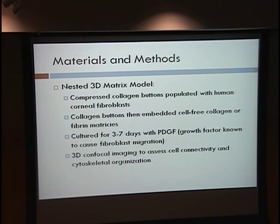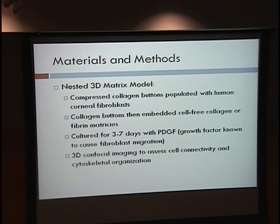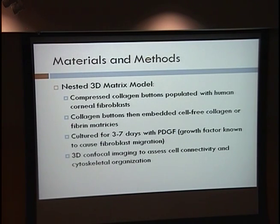The model we developed is called a nested 3D matrix model. I took compressed collagen discs populated with human corneal fibroblasts and embedded them in a cell-free collagen or fibrin matrix. I then cultured the cells for 3 and 7 days with PDGF, a growth factor known to cause fibroblast migration, and stained and imaged the cells with 3D confocal microscopy to assess cell connectivity and cytoskeletal organization.